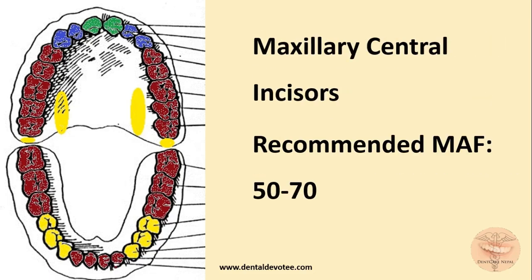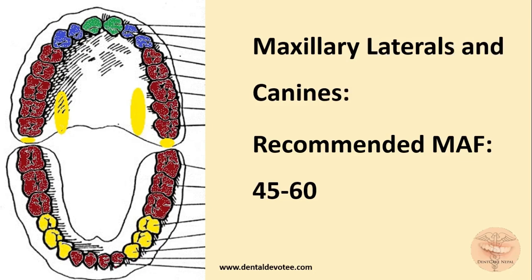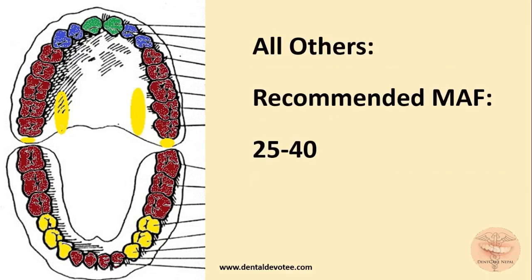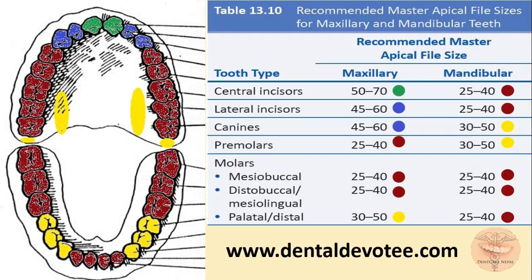So memorizing only these four values: maxillary central incisors 50 to 70; maxillary laterals and canines 45 to 60; mandibular canines, premolars, and maxillary molar distal and palatal roots 30 to 50; and all others 25 to 40. You can memorize the entire table in five minutes — how easy is that!